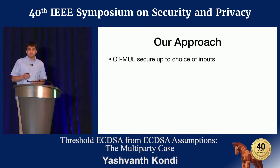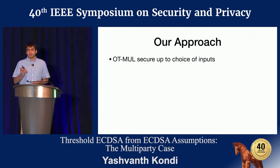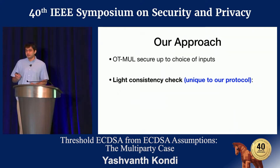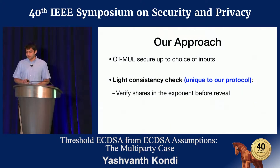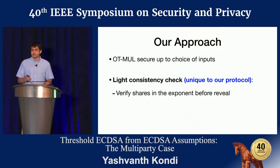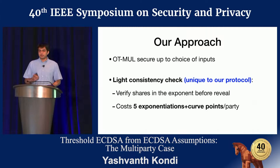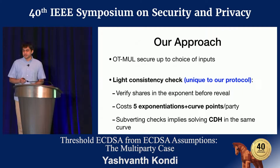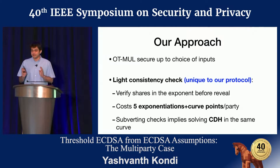We use a multiplier built in our work last year, which we optimize, and it is secured up to choice of inputs. It's a challenge to design a consistency-checking mechanism that ensures an adversary uses correct inputs in all the multipliers. To enforce this, we design a novel, lightweight consistency-checking mechanism unique to our protocol. This works by verifying shares in the exponent before they're even revealed in the clear — costing only five exponentiations per party and about as many curve points to be transmitted. We show that subverting these checks implies solving the computational Diffie-Hellman problem.